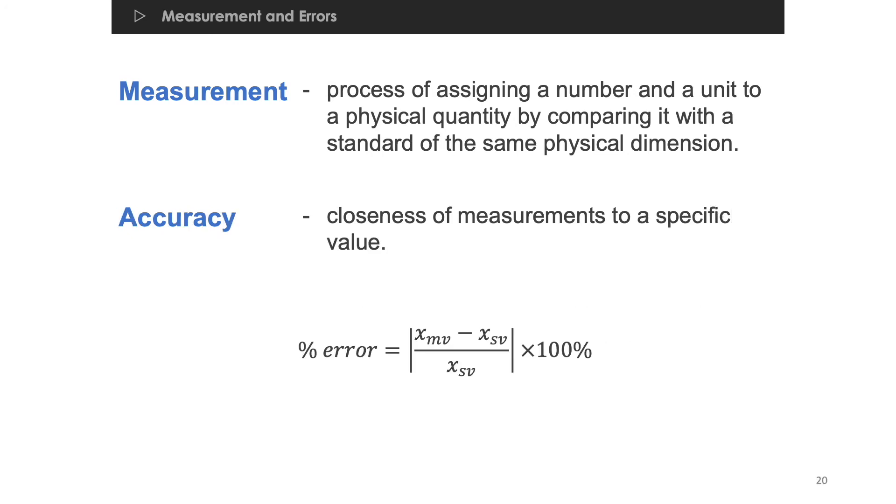On the other hand, when you have a standard numerical value, you can describe a measurement's accuracy by computing the percent error. Here, x sub m v pertains to the measured value, while x sub s v pertains to the standard value.